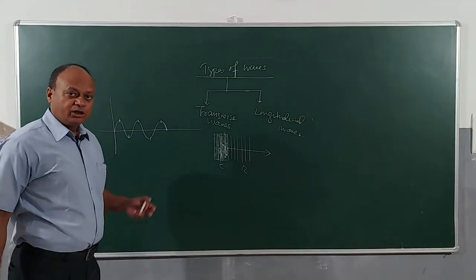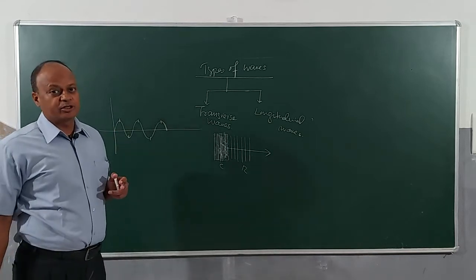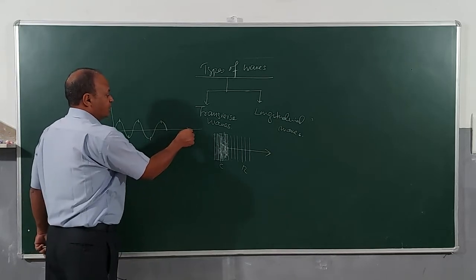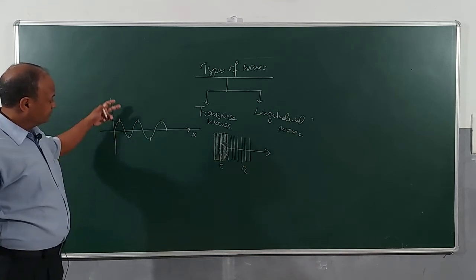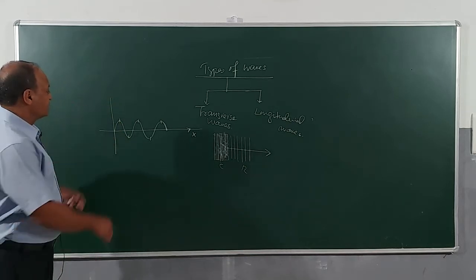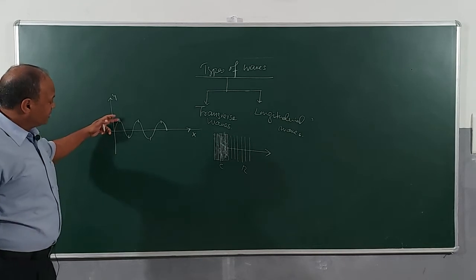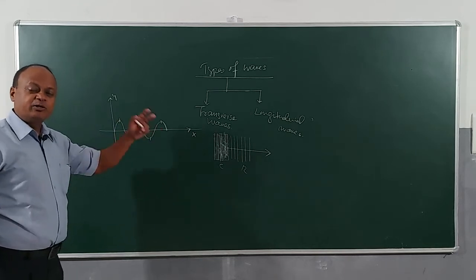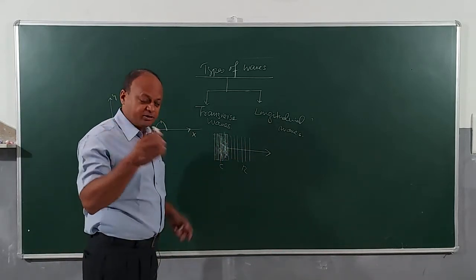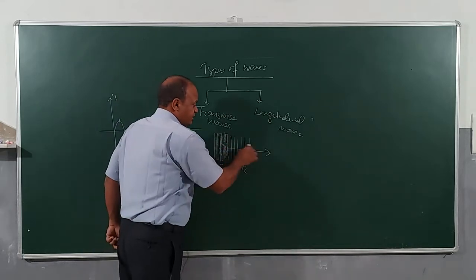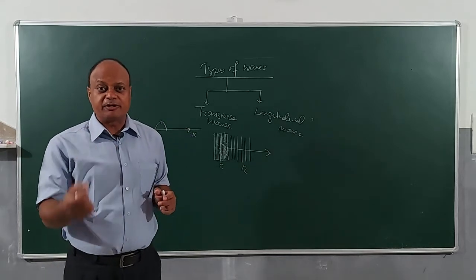The difference: in case of transverse waves, the particles of the medium oscillate perpendicular to the direction of propagation. If the wave is propagating along the x-axis, the particles are oscillating perpendicular to x-axis, say along y-axis. In case of longitudinal waves, like a spring, the particles of the medium oscillate in the direction of propagation of the wave.